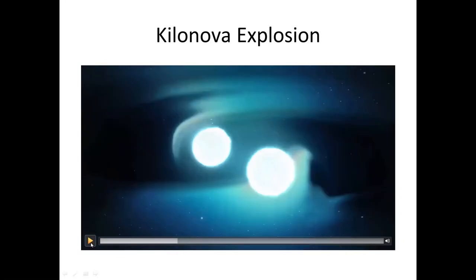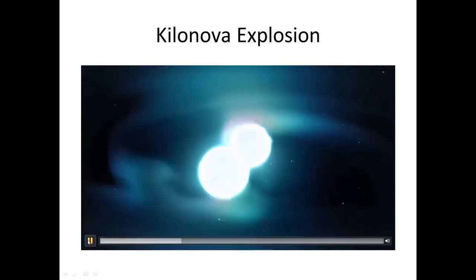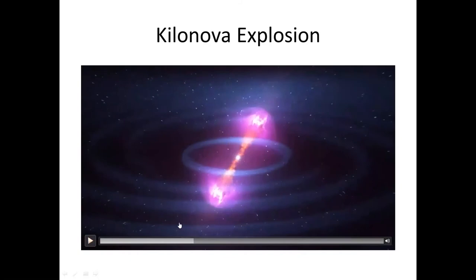Now, as the two neutron stars merge into a black hole, you can see jets coming out. These jets move very close to the speed of light. They are called relativistic jets.